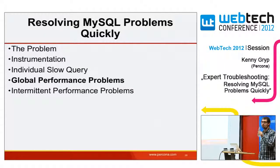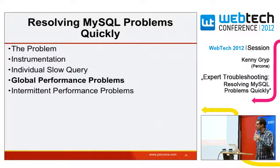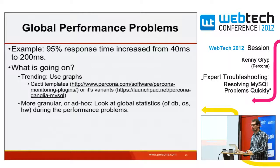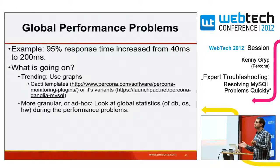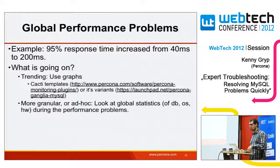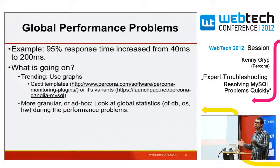Global performance problems. For example, our 95th percentile response time increased from 40 milliseconds to 200 milliseconds — five times slower. To investigate this, we can use trending graphs. You've got Percona Monitoring Plugins for Cacti, Ganglia MySQL plugins, Munin, Zabbix plugins, or you can make your own. These run SHOW ENGINE INNODB STATUS and SHOW GLOBAL STATUS and graph those metrics.